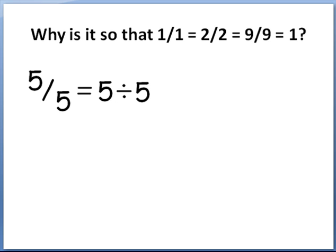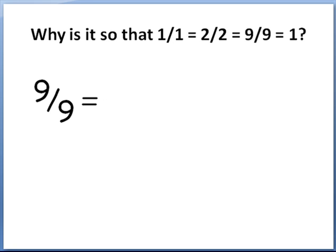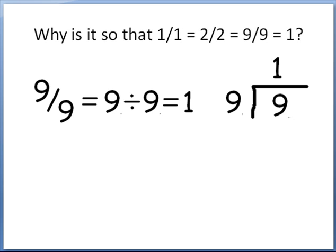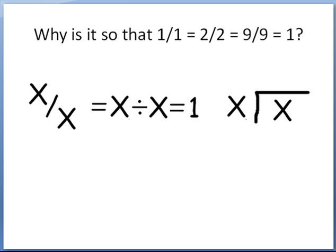Why is 1 over 1, or 2 over 2, or 9 ninths equal to 1? Well, 5 fifths equals 5 divided by 5, and 5 will go into 5 one time — in long division format, it would look like that. 9 ninths is the same thing as 9 divided by 9, and that equals 1. X over X is just X divided by X, whatever X is, and that's equal to 1.